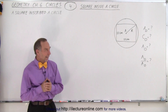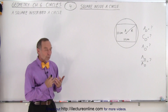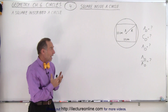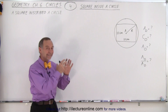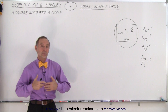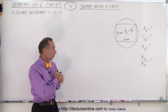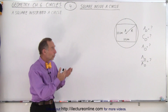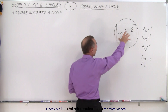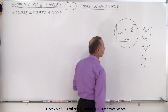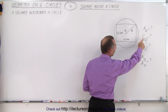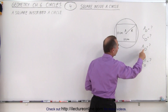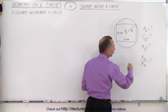Welcome to our lecture online. In this video we're going to show you how to manipulate the information from placing a square inside a circle to determine the circumference of the circle, the area of the circle, and the ratio of the area of the square relative to the area of the circle. That's how we notated the circumference, the area of the square, the area of the circle, and the ratio of the two.